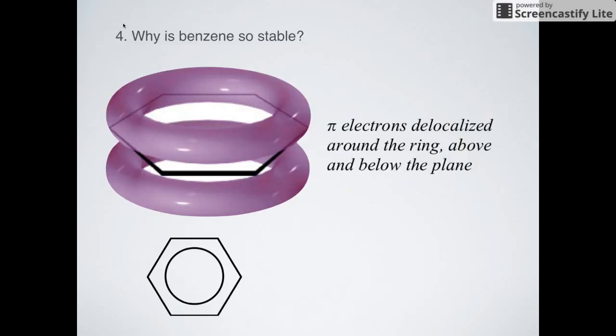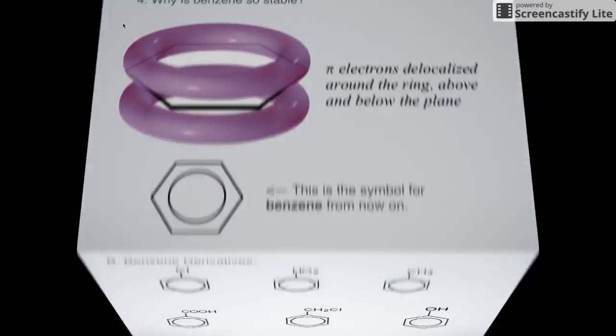So now, whenever you see that nice benzene symbol abbreviated as this, notice that the ring there is supposed to represent something like stability. So pretty much from now on, you're going to see benzene represented like this, but in some cases, you'll see the double and single bonds still there.